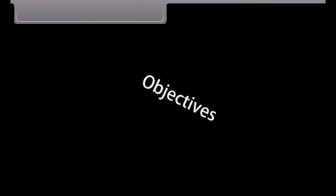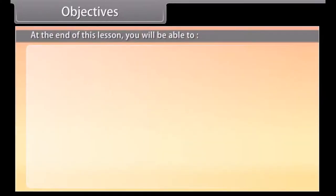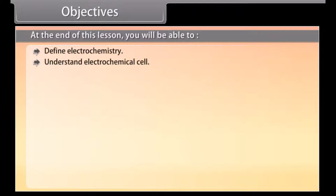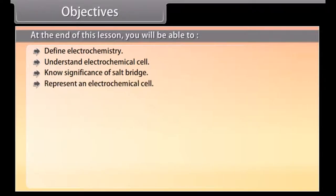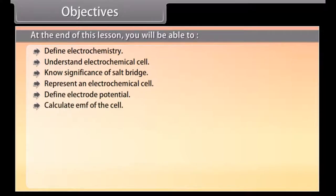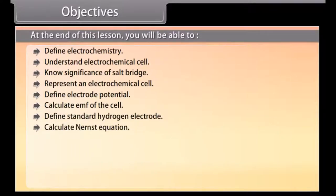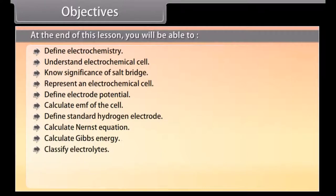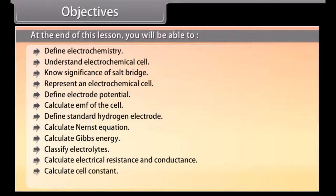Objectives. At the end of this lesson, you will be able to: define electrochemistry, understand electrochemical cell, know significance of salt bridge, represent an electrochemical cell, define electrode potential, calculate EMF of the cell, define standard hydrogen electrode, calculate Nernst equation, calculate Gibbs energy, classify electrolytes, calculate electrical resistance and conductance, calculate cell constant, and explain Kohlrausch's law.